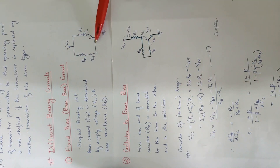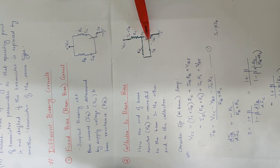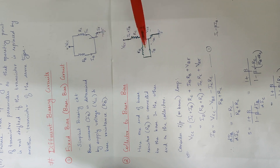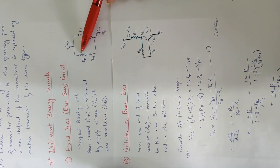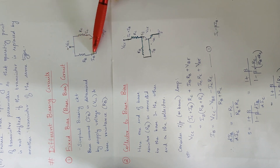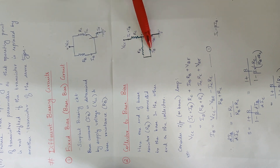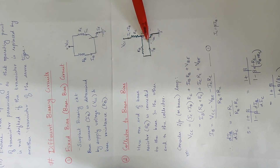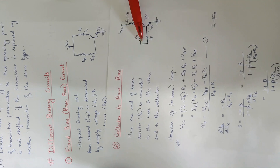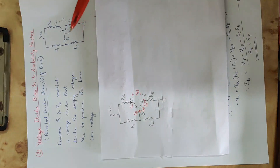We are going to connect the base resistance. If the base current IB is low, it will flow. We are going to connect the resistance, then connect the voltage divider bias circuit.